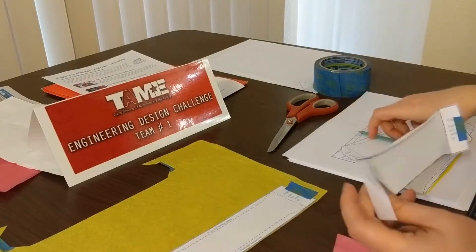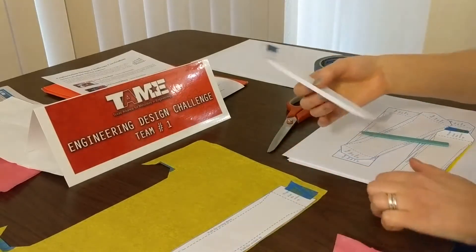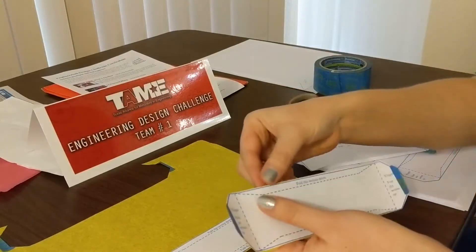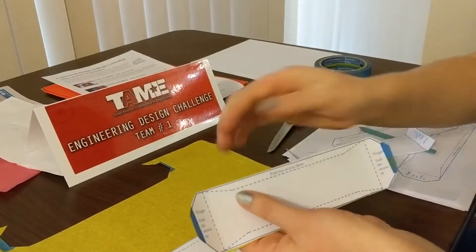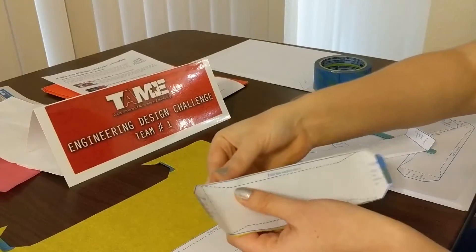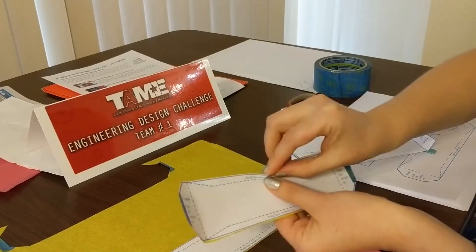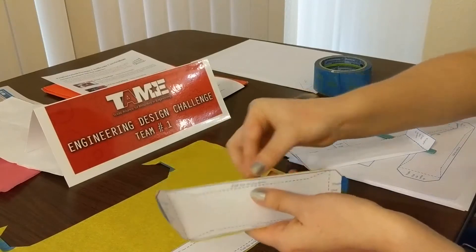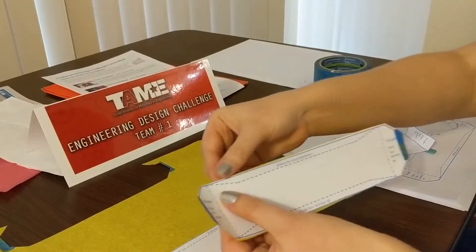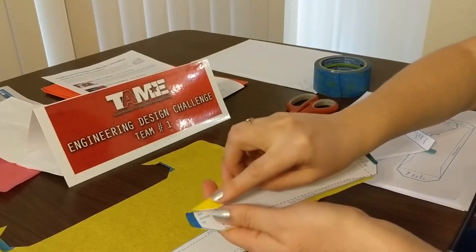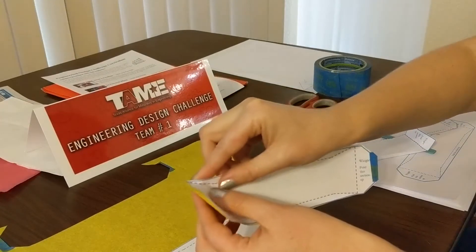And so the step after that is to go ahead and crease the edges. The first one you're going to crease towards you. So you're just going to fold down, pinch along those edges, pinch there, pinch there, pinch there. And you can even crease it. You can use your fingernails to crease it. When you get to this edge, make sure you're not folding it all the way down. You're folding along that dotted line.